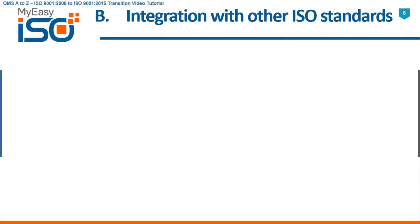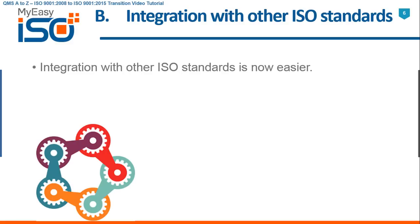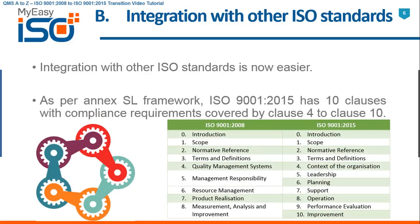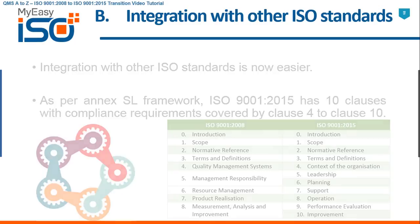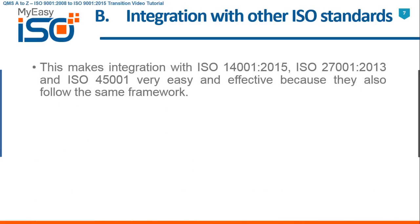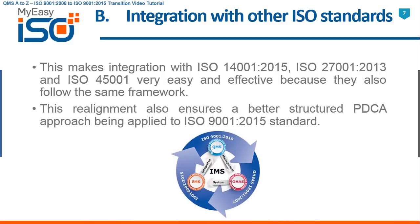B. Integration with other ISO standards is now simple and easy. As per the Annex SL framework, ISO 9001 2015 has 10 clauses with compliance requirements covered by clause 4 to clause 10. This makes integration with ISO 14001 2015, ISO 27001 2013, and ISO 45001 very easy and effective because they follow the same framework. This realignment also ensures a better structured PDCA approach being applied to the ISO 9001 2015 standard.